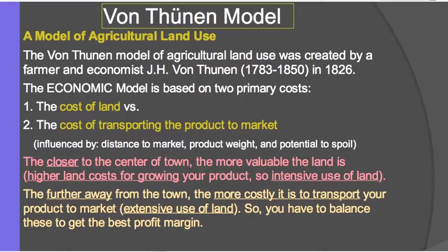So it's an economic model based on two costs. One is the cost of the land — where would you grow different crops or raise different animals based on the cost of the land — and the cost of transporting that product, whether it's crops or animals, to the market. This cost of transportation is definitely influenced by the distance to the market. The longer the distance, the more costly it would be in transporting.